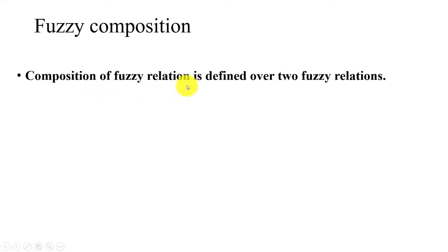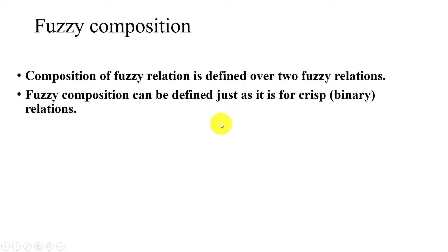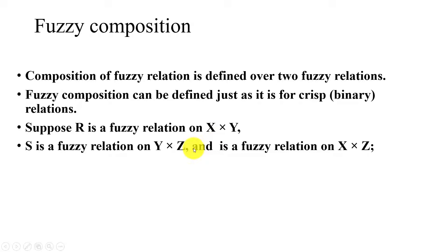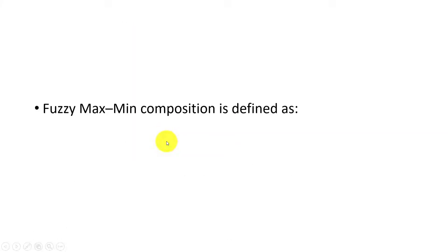The composition of fuzzy relations is defined over two fuzzy relations, so we require two fuzzy relations here. It is similar to the crisp binary relationship, but we need two relations — that is X and Y — and it is represented by a third matrix or third fuzzy relation on Y cross Z.